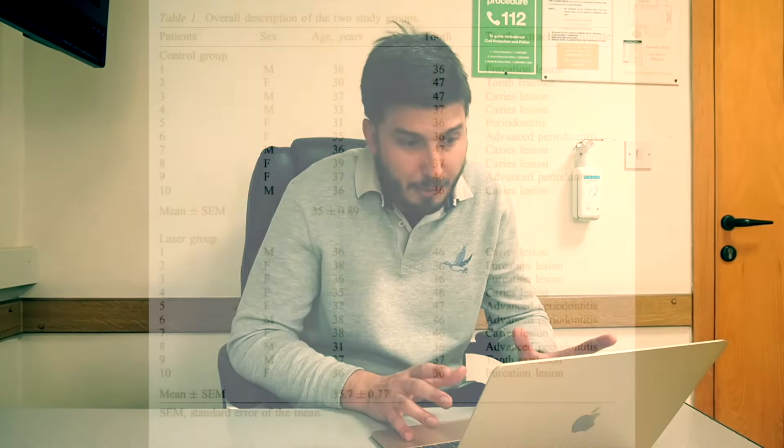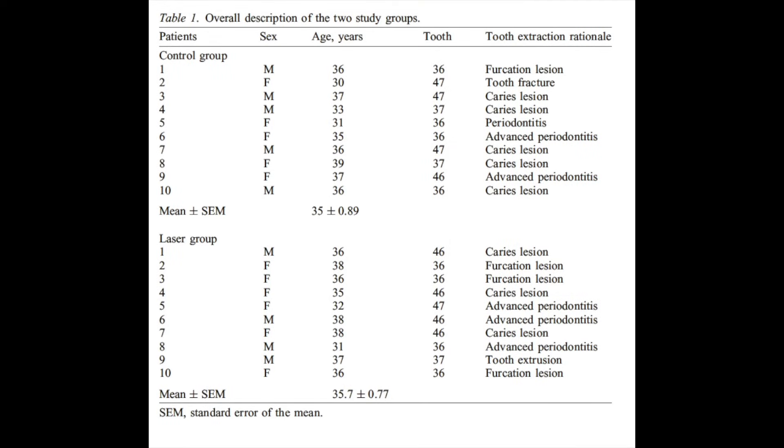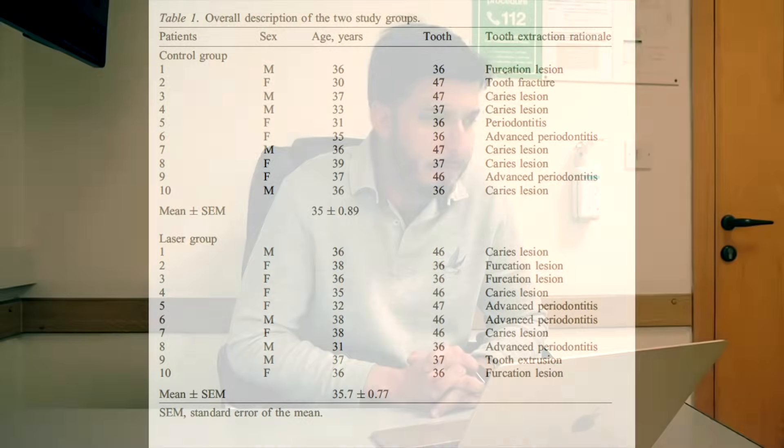There are two groups in this study. Table 1 is a descriptive table showing patient gender. Since this is a pilot study, individual data for all patients are included — 10 patients per group. Then we have pictures, and then Table 2 showing microCT parameters.